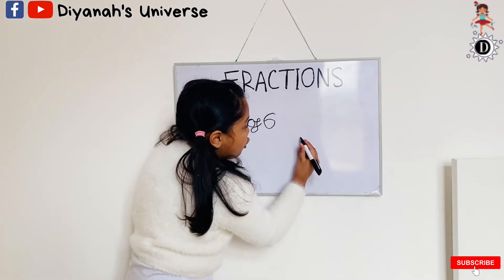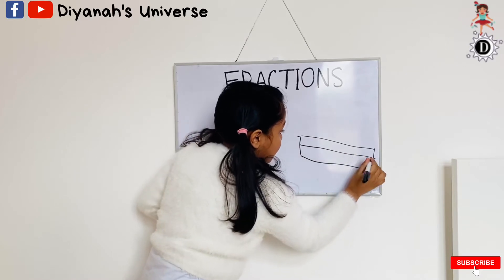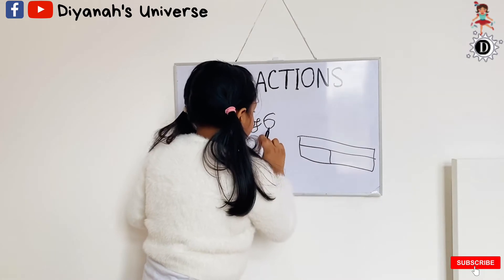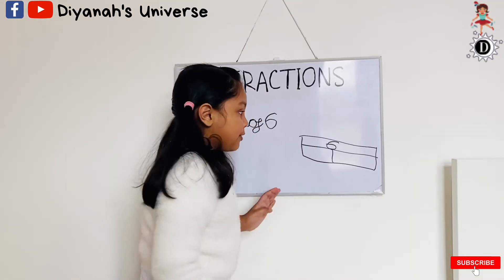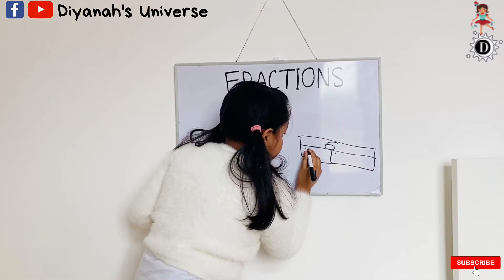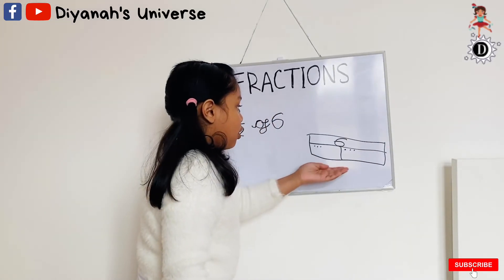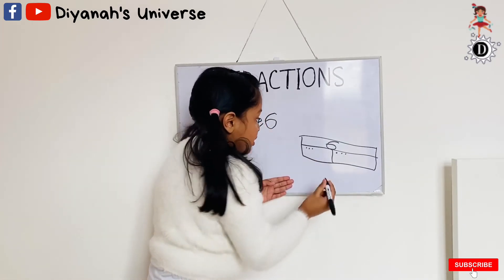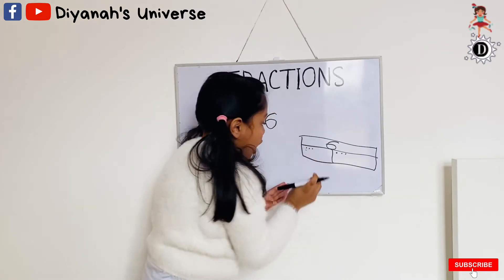First we have to draw a rectangle like this. And we have to write the main number up top, which is six. And we have to share the dots out like this: one, two, three, four, five, six — there are three in each part. And I have to count one box: one, two, three. And so the answer is three.